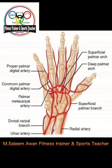Hello everyone, welcome back to osteology classes. Today we will learn about the skeleton of the hand. The skeleton of the hand is made of carpal bones, which make the proximal part. Distal to the carpal bones there are five metacarpal bones, and distal to the metacarpal bones the bones present in the fingers are known as phalanges.